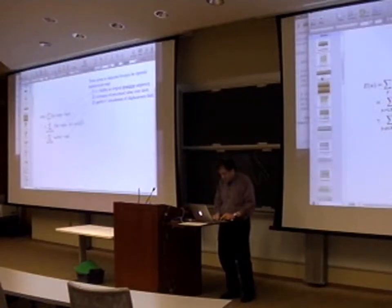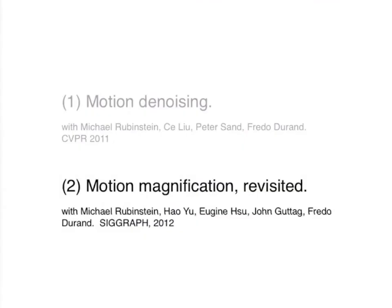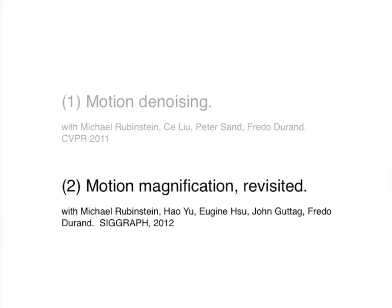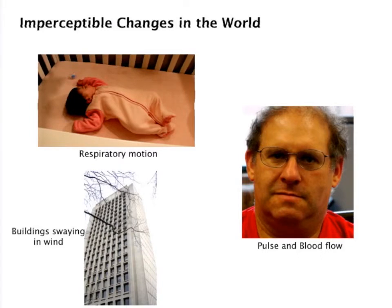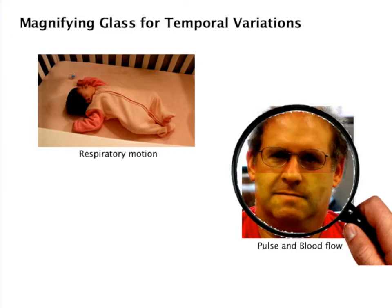On to part two. The previous work was presented at CVPR last year; this work will be presented next month at SIGGRAPH. We call it Eulerian video magnification. We want to make a kind of microscope on the world — a viewing device that lets you see things you couldn't see otherwise. We want to apply it to a video of a baby breathing and see those changes more clearly, and apply it to a person's face to see color changes caused by blood flow during the pulse.